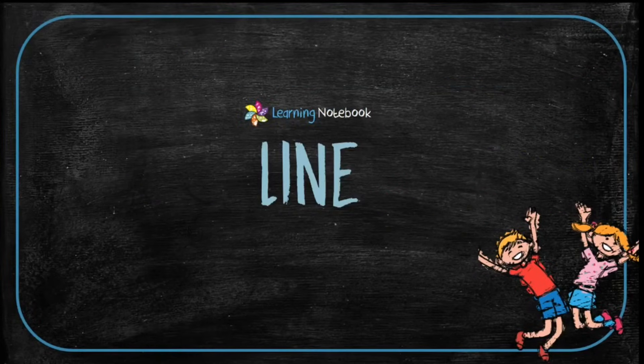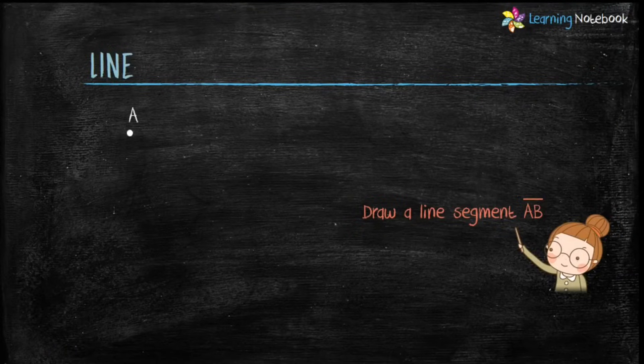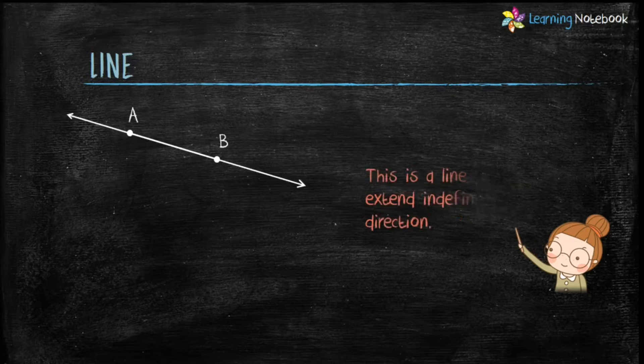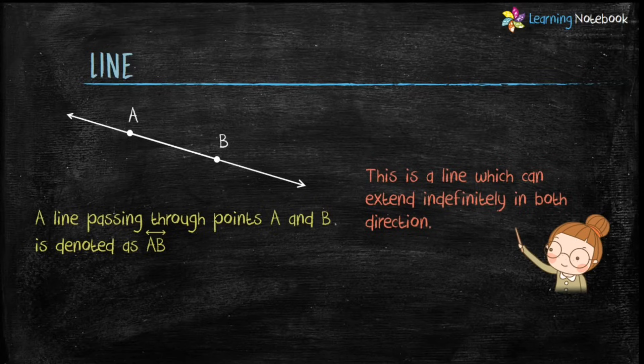Next is line. First draw a line segment AB. Now extend this line segment in both directions and we get a line. This is a line where arrows represent that it can be extended indefinitely in both directions.